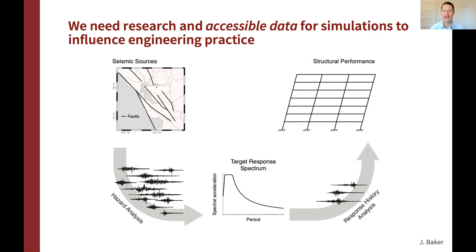I like to think about a graphic as a way to consider the role of ground motion simulations in engineering practice. We start with seismic sources for a region and are interested in the seismic hazard at a particular location. As we perform seismic hazard analysis, we can use ground motion simulations to quantify the distribution of ground shaking intensity anticipated from any particular rupture. Through that procedure, which can utilize ground motion simulations, we arrive at a target response spectrum.